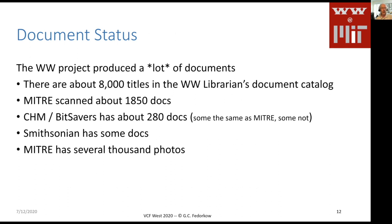As I mentioned, the project produced quite a few documents. We have found the librarian's document catalog — the listing of all documents produced by the Whirlwind project — and it runs to some 8,000 titles over the 10-year period of the program. Some years ago, MITRE scanned about 1,800 of these documents, which are available at MIT. Bitsavers carries about 280 of the documents, some overlapping the MIT collection and some different. There are also some documents at the Smithsonian, and MITRE still has thousands of photos from the Whirlwind project.